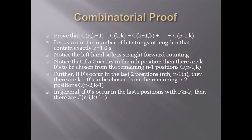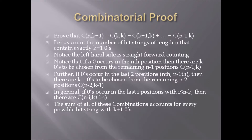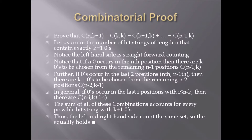In general, if zeros occur in the last i positions with i less than n-k, then there are C(n-i, k+1-i) different ways that can be done. When you sum all of these combinations together, it accounts for every possible bit string with k+1 zeros. C(k,k) corresponds to all k+1 zeros occurring in the last k+1 positions. Summing them all together gives C(n, k+1). Thus the left and right-hand sides count the same set, so the equality holds.